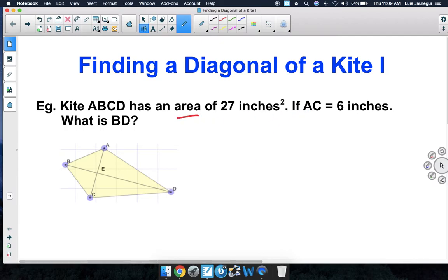Notice that we're given the area is 27 square inches, and we're also given the length AC is equal to 6 inches. Let's go ahead and identify the length AC here. AC is equal to one of the diagonals of your kite, and that is equal to 6 inches in length.